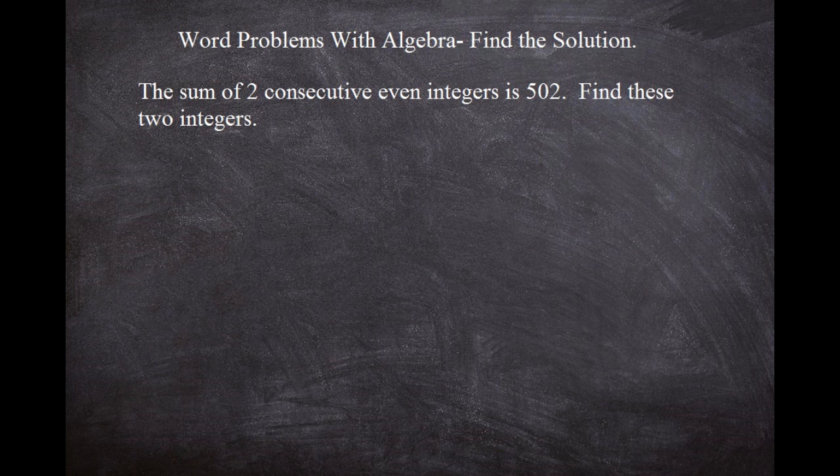Now what we want to think about is we have to have a variable set for an even number. So we can't just say let the variable be like A or B or N or whatever. We have to have some kind of way to set it to where it shows that it's actually even.